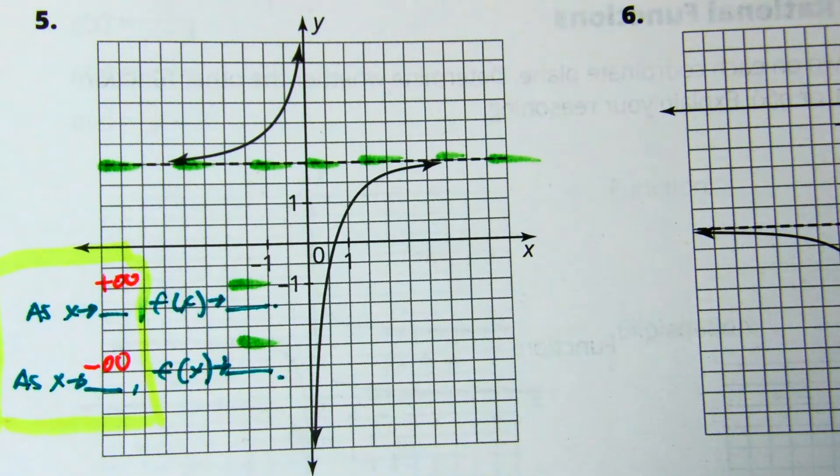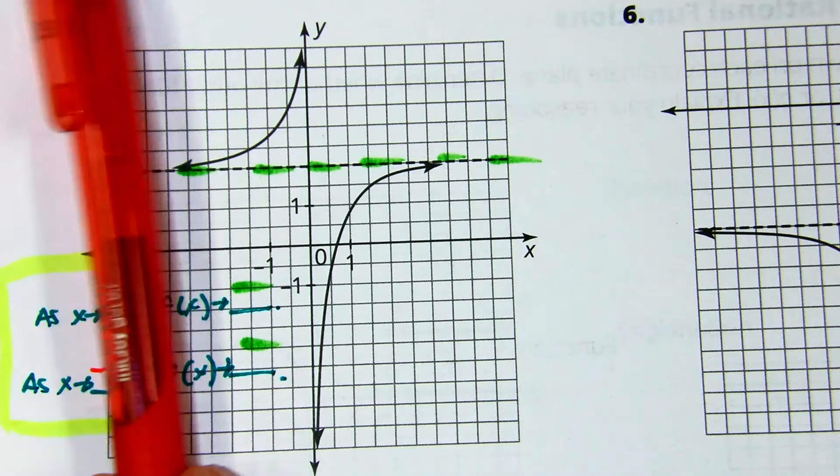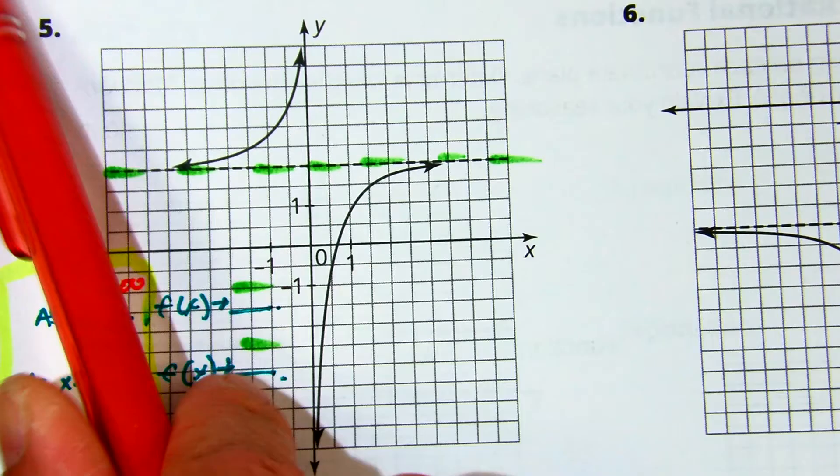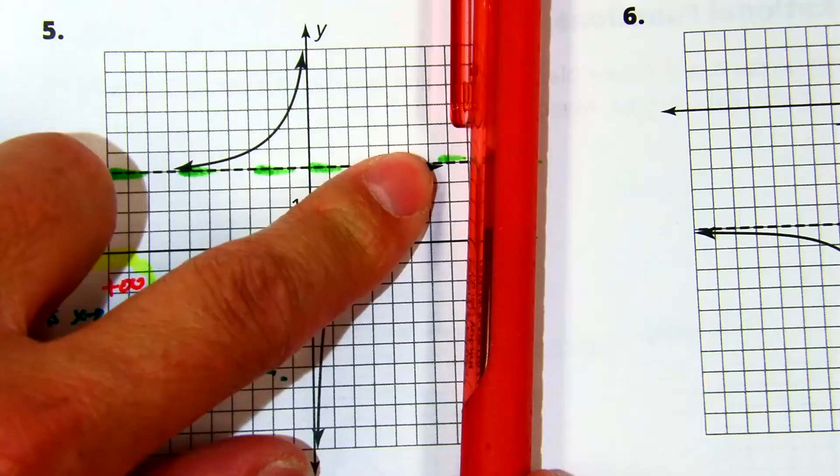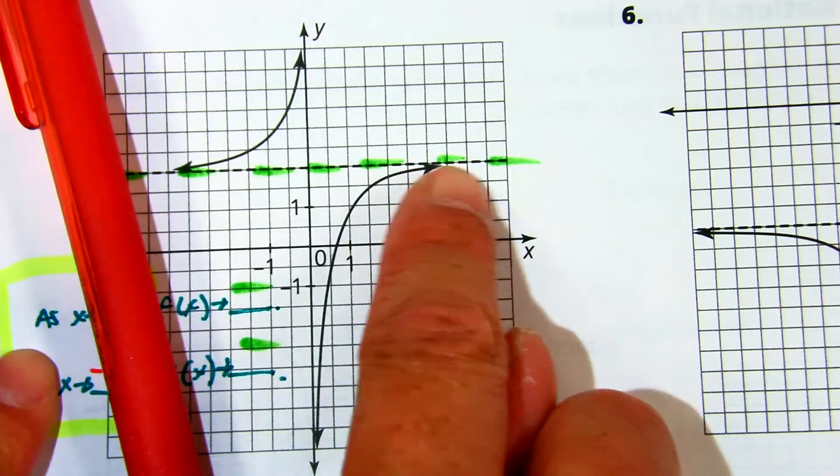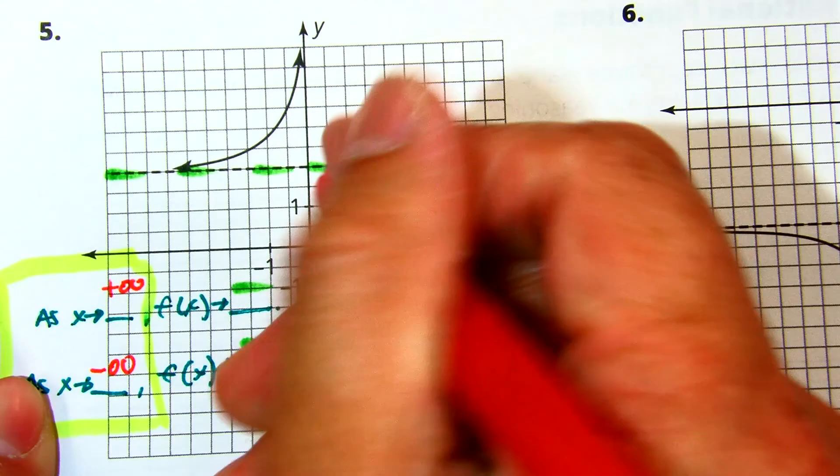So, as I go from left to right, class, is that arrow going up? Is it going down? It's approaching what number? Positive 2. 2 is your answer.